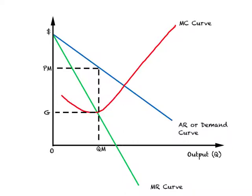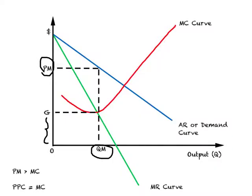Let us revisit the diagram with respect to equilibrium under monopoly — how much output will be produced by the monopolist, what will be the price charged, and how much will be the marginal cost of production. What we find under monopoly is that the price charged by the monopolist is greater than the marginal cost of production.